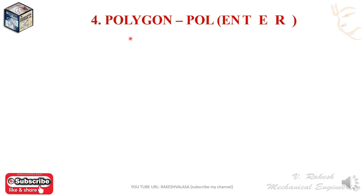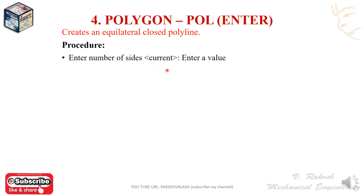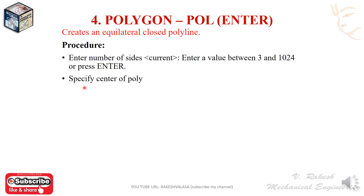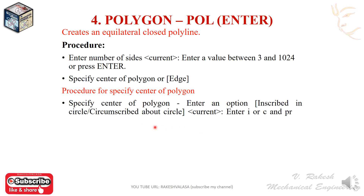The next command is polygon. The shortcut is POL, Enter. It creates an equilateral closed polyline. Procedure: enter the number of sides — a value between 3 and 1024 — then press Enter. Specify the center of the polygon or choose the edge option. When specifying by center, it shows two options: inscribed circle or circumscribed circle.